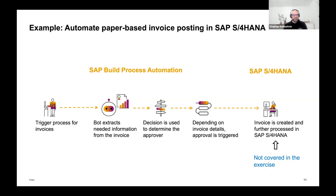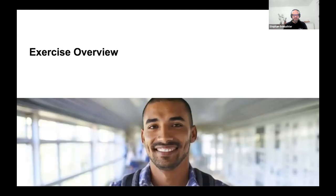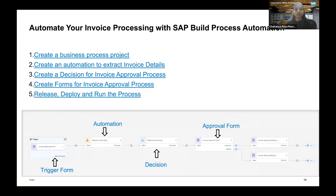Now let me hand over to Priya for an overview of the exercise. Today we will automate invoice processing using SAP Build Process Automation. You should have received the prerequisites where you subscribed to SAP Build Process Automation, either in a trial account or a free-tier account. Note: if process automation isn't appearing in your trial account search, try searching with 'SAP Process Automation' — the rename hasn't happened yet. All details are mentioned in the prerequisites document shared with you.